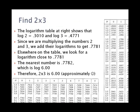To find 2 times 3, on the logarithm table at the right we can find the log of 2.00 is .3010 and the log of 3 is .4771. Since we're multiplying the numbers 2 and 3, we're going to add the logarithms. When we add those logarithms you get .7781.